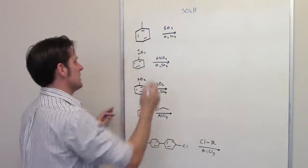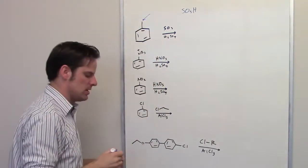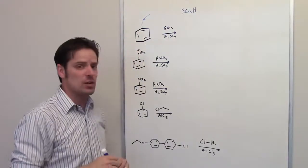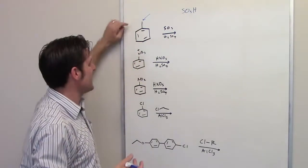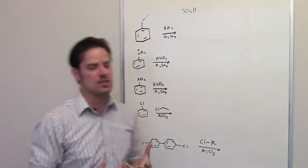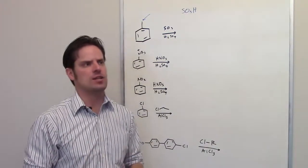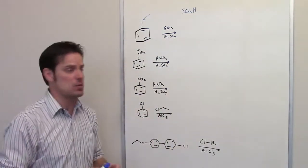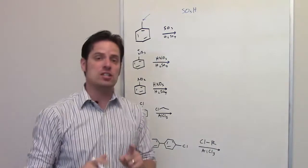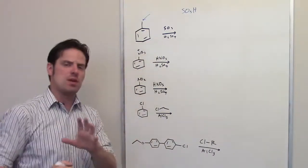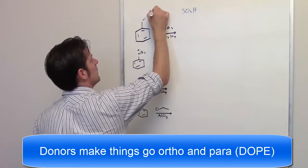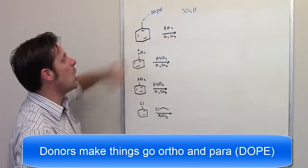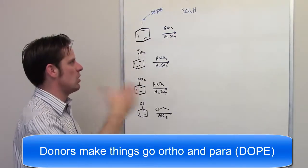However, it does have something on it. It's got this CH3, this methyl group right there. So, where in the world does this SO3H go on this ring? Well, that is all going to depend upon what type of group a methyl group is. A methyl group is an alkyl group. That is a hydrocarbon chain. Well, only one carbon long, I guess. But it is, nonetheless, one of those. Which means that it is a donor. And we have to remember that substituents that are donors are ortho-para directors. We do that by remembering the mnemonic DOPE. Donors make things go ortho and para.